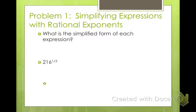So what is the simplified form of each expression? 216 to the 1/3 power. Now, we want to know if there's a number that we could multiply three times to make 216. So the 1/3 power is the same as the third root. So these mean the same thing. They're interchangeable terms. So 6 cubed is 216. So the cubed root of 6 cubed is 6.